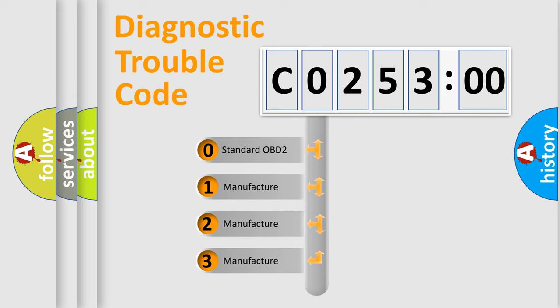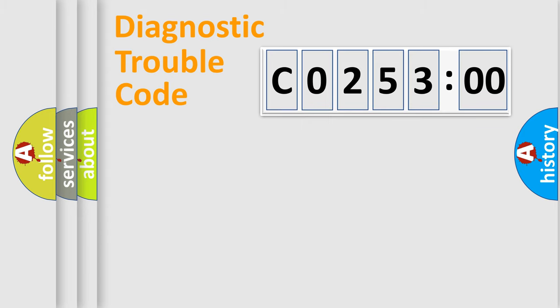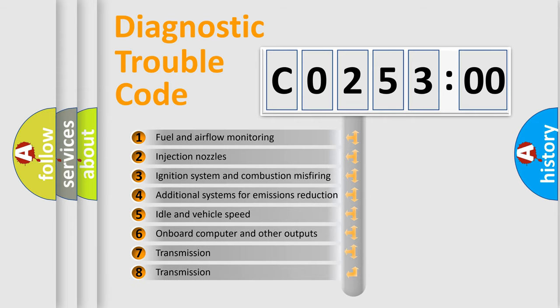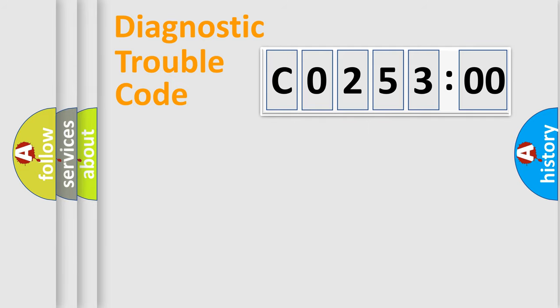If the second character is expressed as zero, it is a standardized error. In the case of numbers 1, 2, or 3, it is a more specific expression of the car-specific error. The third character specifies a subset of errors. The distribution shown is valid only for the standardized DTC code. Only the last two characters define the specific fault of the group.